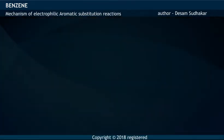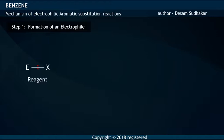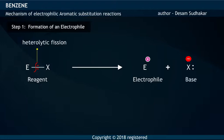Let us study these steps in detail. The first step involves the formation of an electrophile. The reagent undergoes heterolytic bond cleavage and forms an electrophile along with a base.